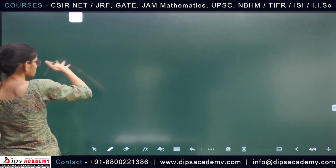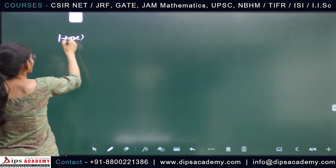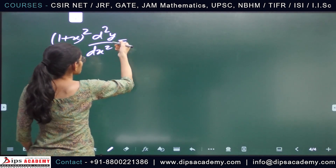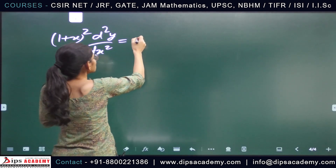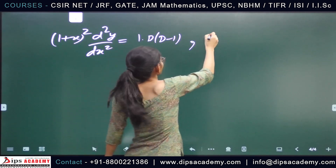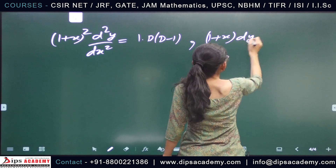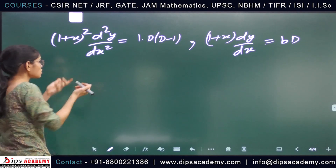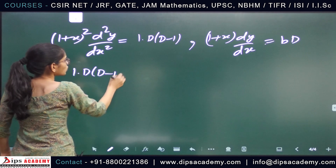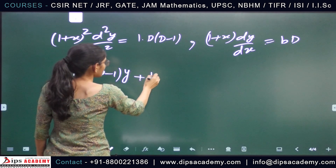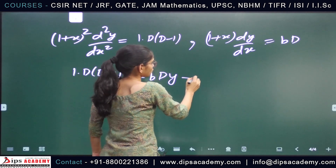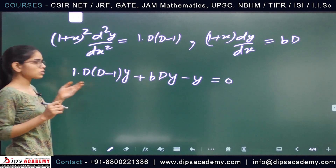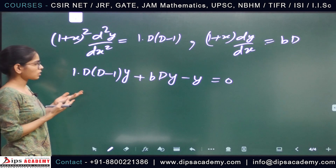Substituting into the differential equation: (1+x)² d²y/dx² = D(D-1) and (1+x) dy/dx = D, with b = 1. Putting these values into the given equation, we get D(D-1)y + Dy - y = 0, which is a differential equation in z with constant coefficients.